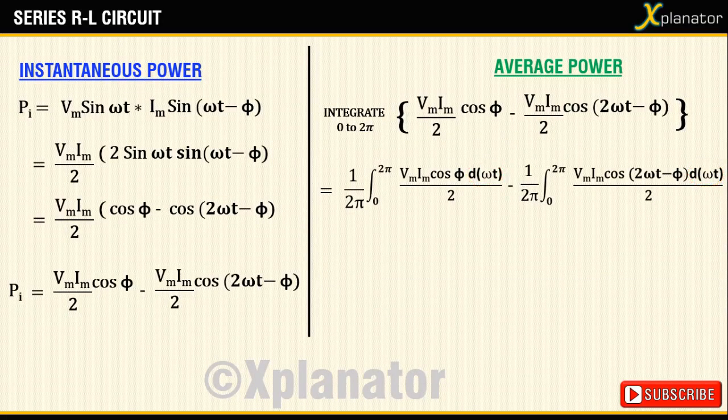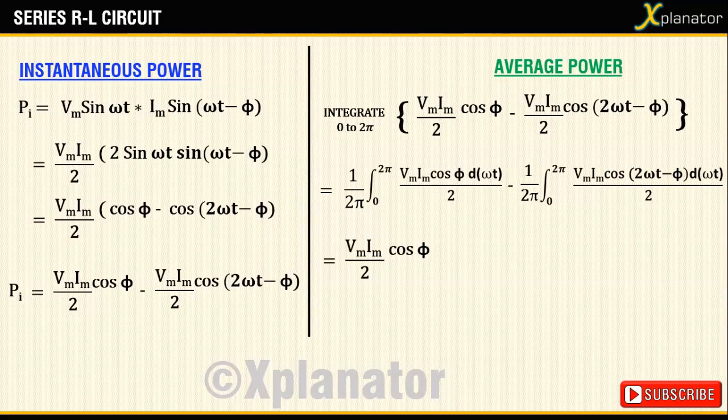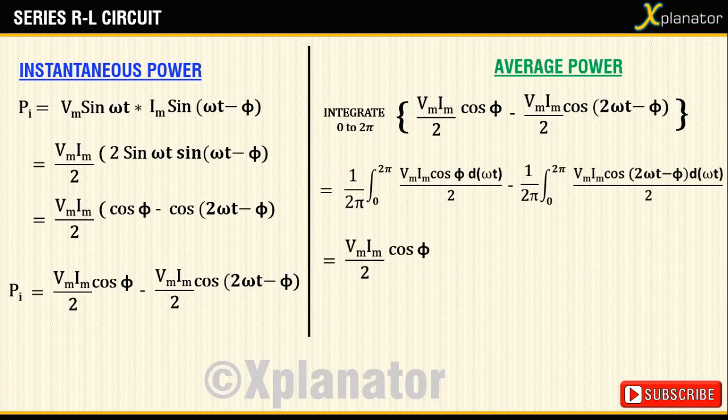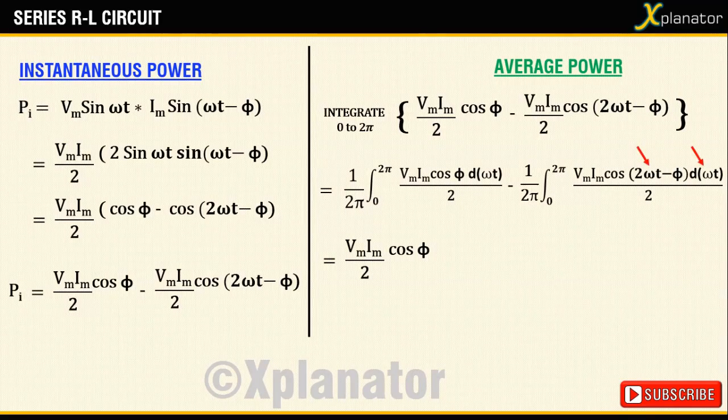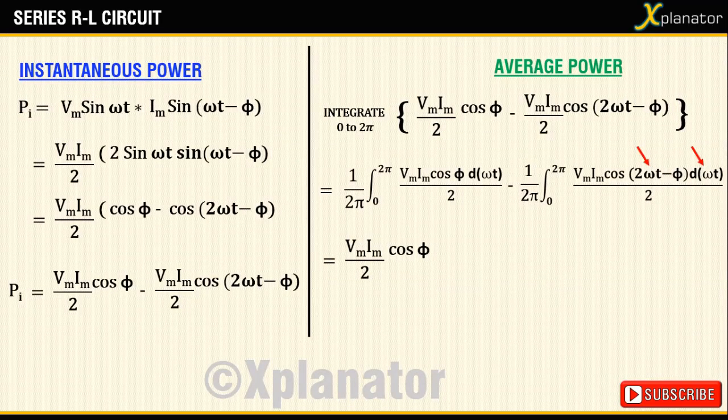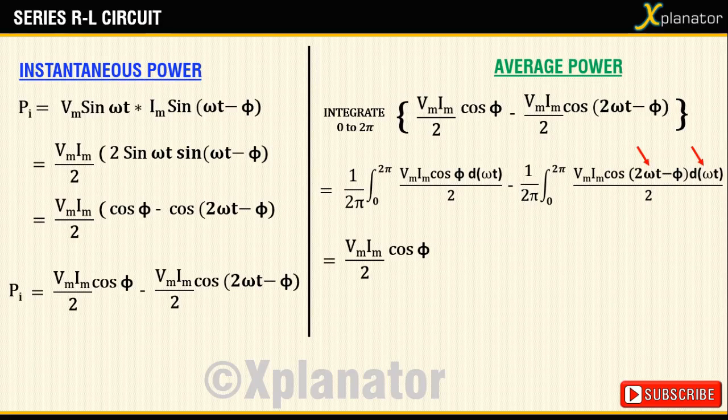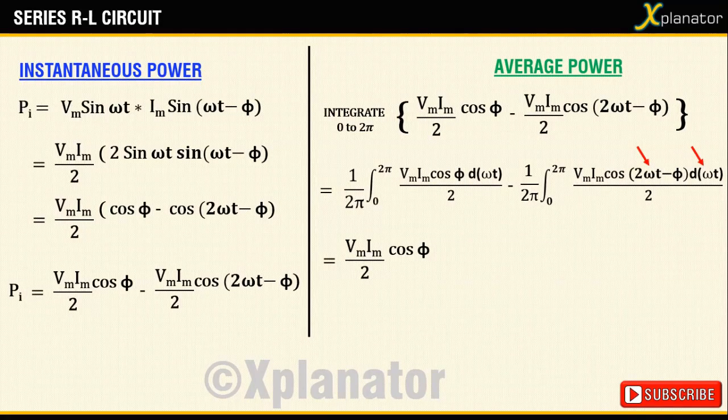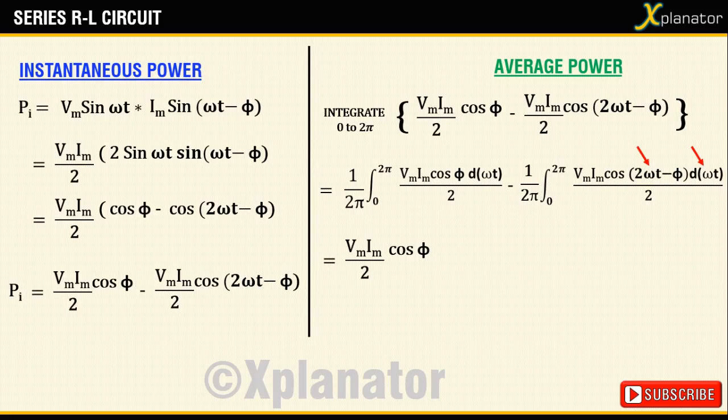Integration will give VI cos phi by 2, while the second term has cos omega t in it. And we know that the average value of cos from 0 to 2 pi is 0. So the second part of the equation will return a value 0.